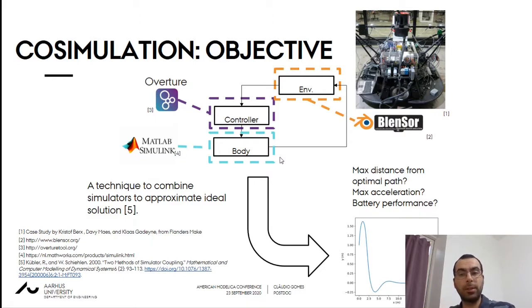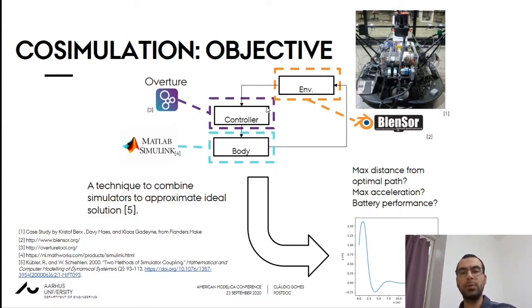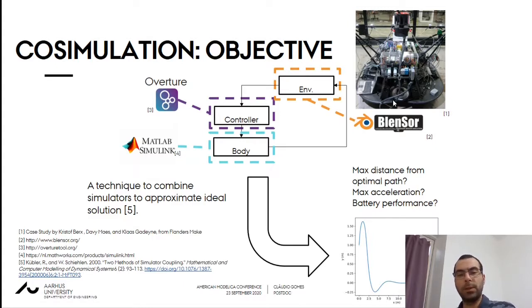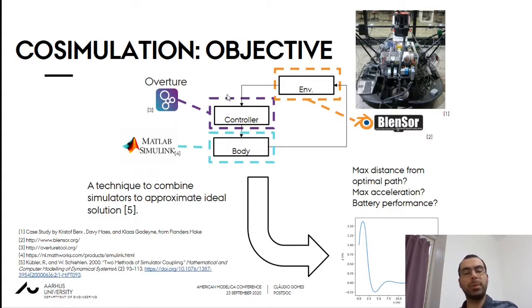Co-simulation is a technique to combine simulators in order to approximate the ideal solution of a coupled system. To illustrate, suppose I'm trying to understand the behavior of an automated ground vehicle that you see here on the right. The system is comprised of three important components: the environment, the controller, and the body. Each of these is best modeled using a dedicated tool, so the co-simulation is there to connect these different tools and compute the overall behavior.